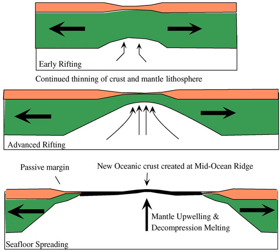Heat flow at passive margins changes significantly over its lifespan — high at the beginning and decreasing with age. In the initial stage, the continental crust and lithosphere is stretched and thinned due to plate movement and associated igneous activity. The very thin lithosphere beneath the rift allows the upwelling mantle to melt by decompression. Lithospheric thinning also allows the asthenosphere to rise closer to the surface, heating the overlying lithosphere by conduction and advection of heat by intrusive dikes. Heating reduces the density of the lithosphere and elevates the lower crust and lithosphere. In addition, mantle plumes may heat the lithosphere and cause prodigious igneous activity.